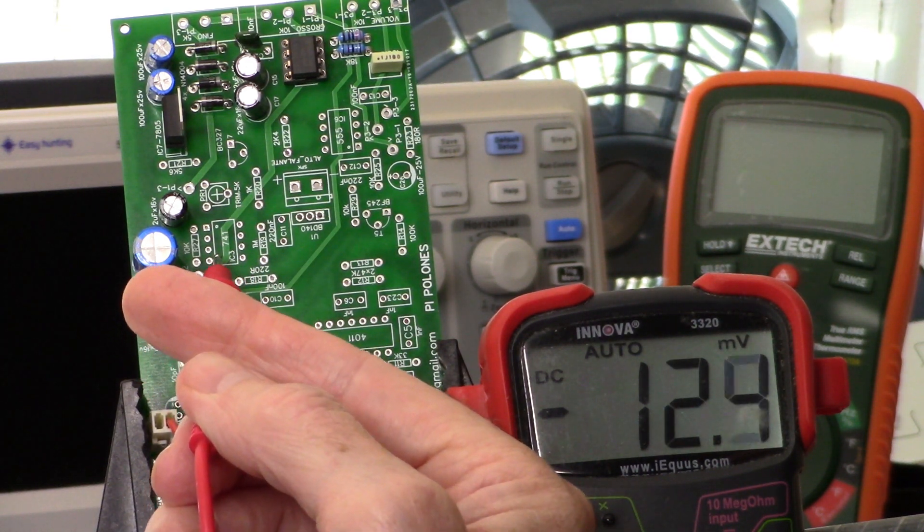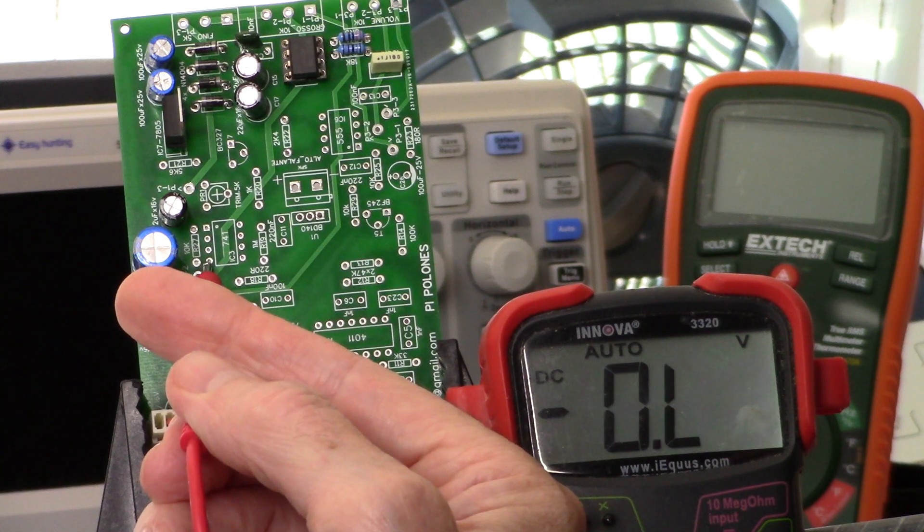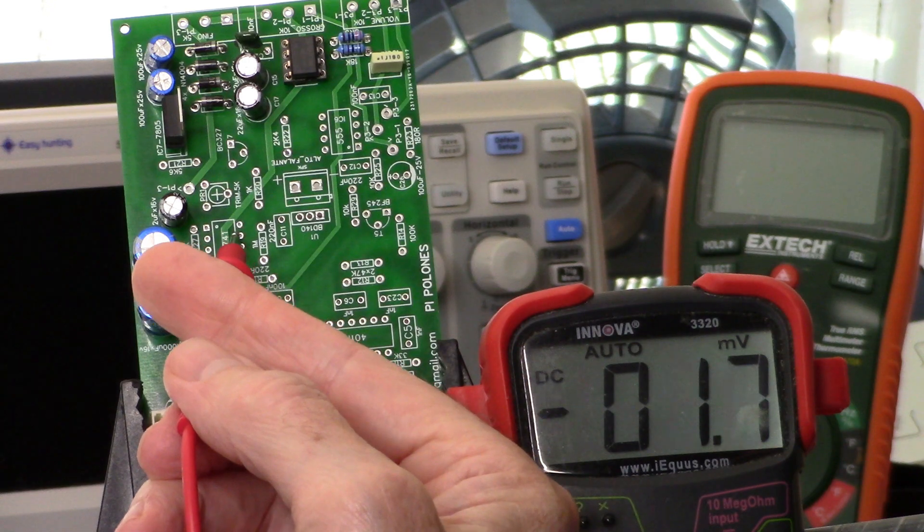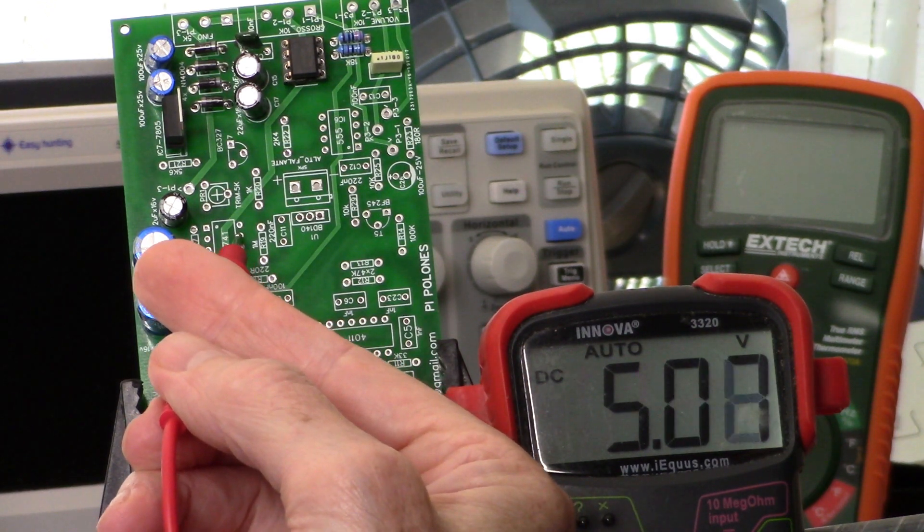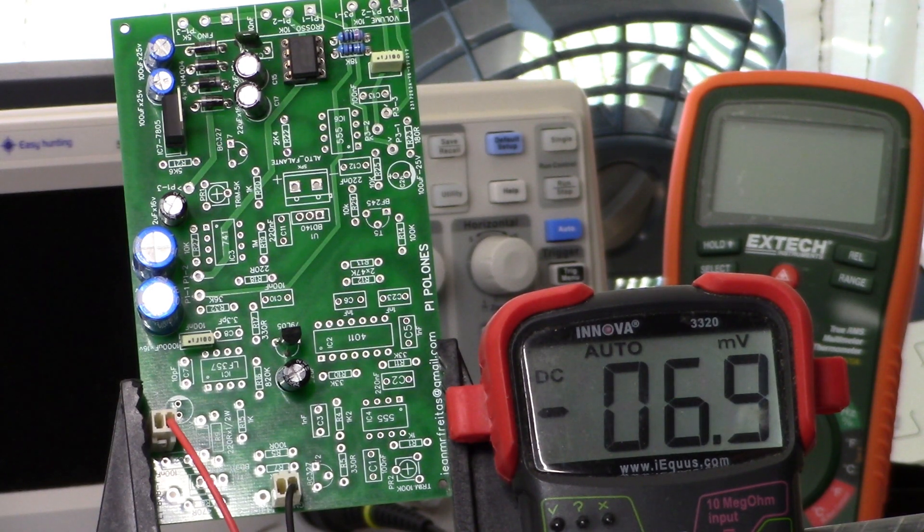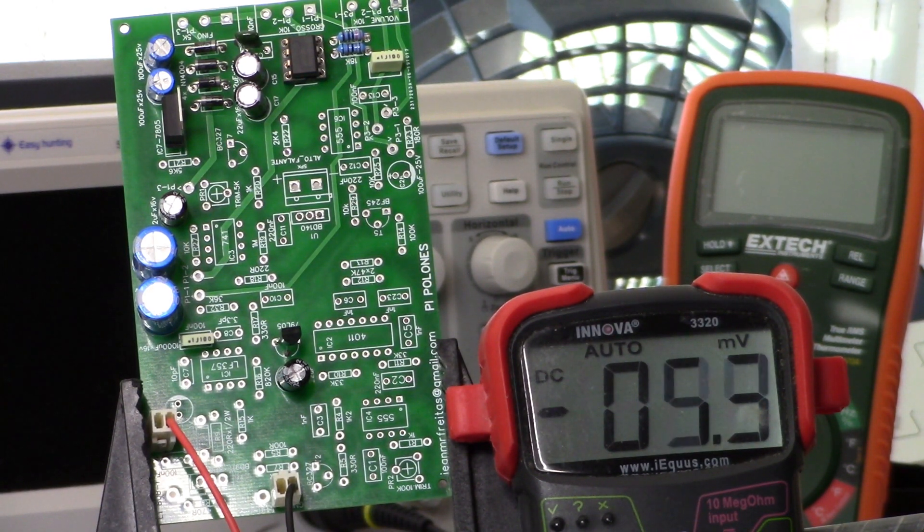And then once again over here on the other IC, this is IC3, and we're looking for negative 5 volts on pin 4 and positive 5 volts on pin 7.